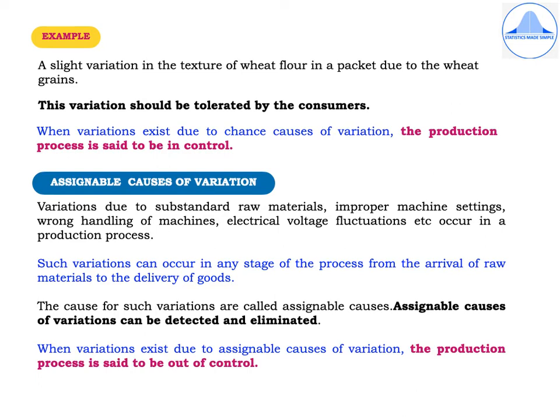Assignable causes of variation arise from substandard raw materials, improper machine settings, wrong handling of machines, electrical voltage fluctuations, etc. Such variations can occur at any stage of the process, from the arrival of raw materials to the final delivery of goods. The causes for such variations are called assignable causes. Unlike chance causes, assignable causes of variation can be detected and eliminated. When variations exist due to assignable causes, the production process is said to be out of control.